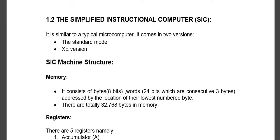When you go to SIC, what is its full form? Simplified Instructional Computer. It has two models: one is SIC Normal Standard Model, and one is SIC XE Model. First we will see about SIC Machine Architecture.